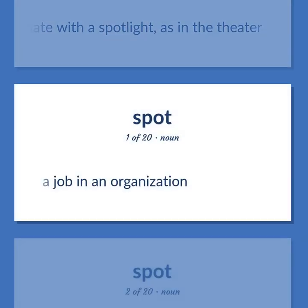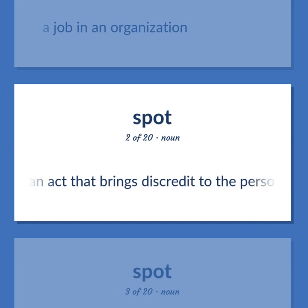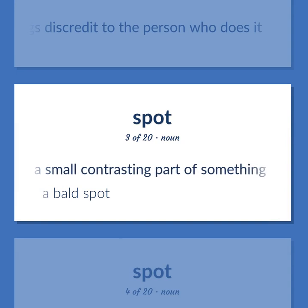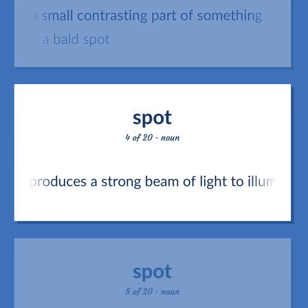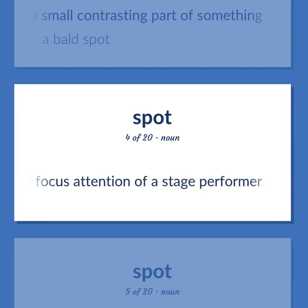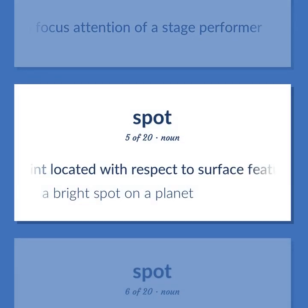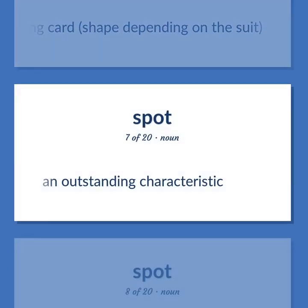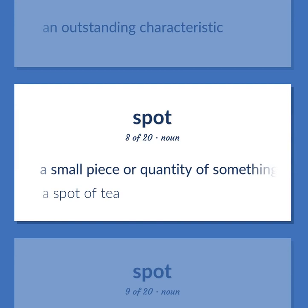Spot: a job in an organization. An act that brings discredit to the person who does it. A small contrasting part of something. A bald spot. A point located with respect to surface features of some region. A bright spot on a planet. A mark on a die or on a playing card, shape depending on the suit. An outstanding characteristic. A small piece or quantity of something.